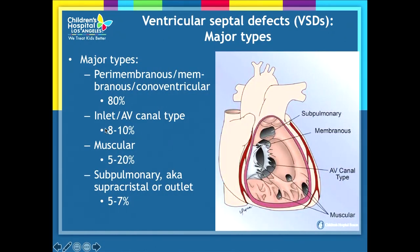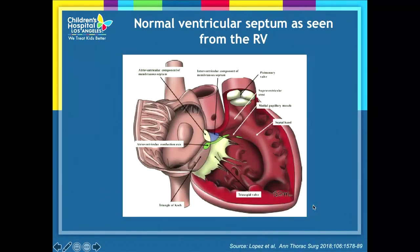Certain VSD types are more common. In the United States, perimembranous or membranous VSDs are the most common, accounting for about 80% of all defects. Muscular and inlet-type VSDs make up another 10% to 20%, while supercrystal VSDs are only about 5% to 7% in the United States, though they are certainly much more common here in Asia.